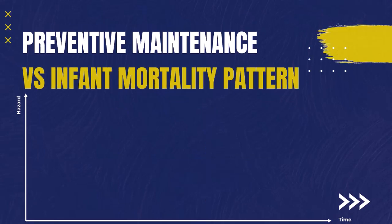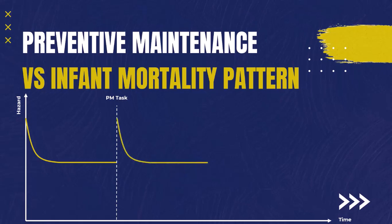In the case of infant mortality pattern this is even more interesting. The hazard pattern over time leads us to interfere by changing parts at some point, which results in the pattern starting from the beginning again — but higher. So we have actually spent money and increased the hazard of failure, because the asset was functioning properly and we replaced it with a new part that could have a manufacturing malfunction, resulting in a higher hazard of failure.